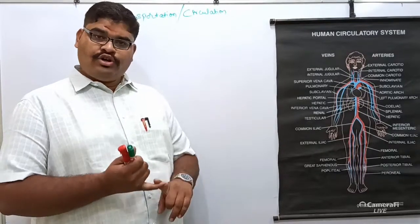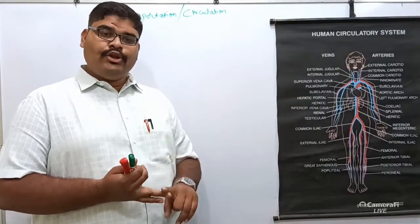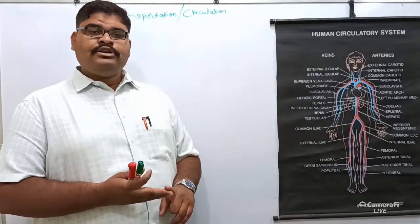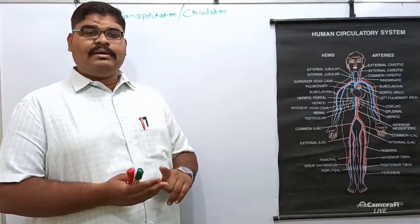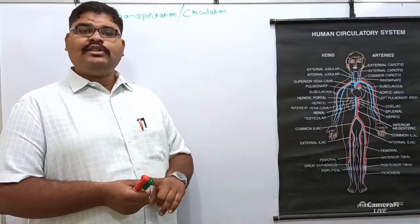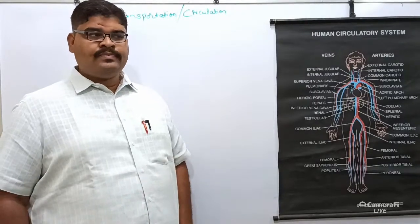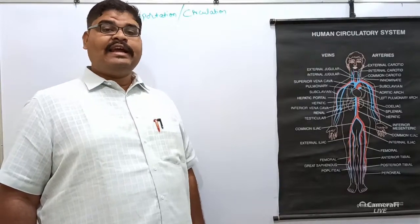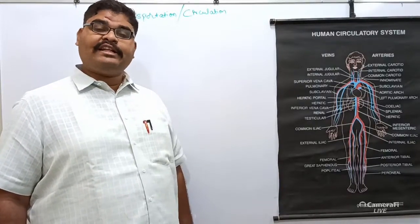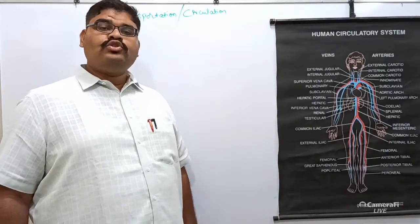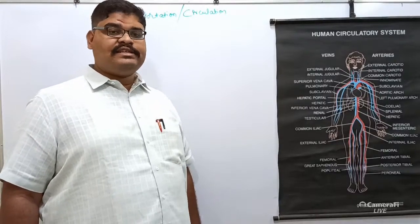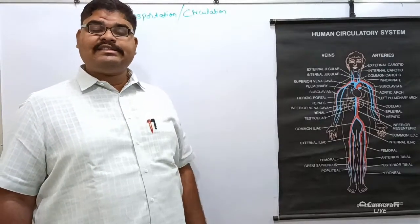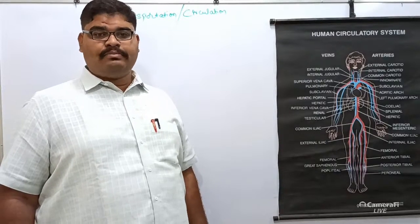May it be the oxygen, may it be the nutrients, may it be the enzymes, may it be the medicines, may it be the hormones — all these things are essential and therefore they need to be transported throughout the body, and this is carried out by the circulatory system of our body.